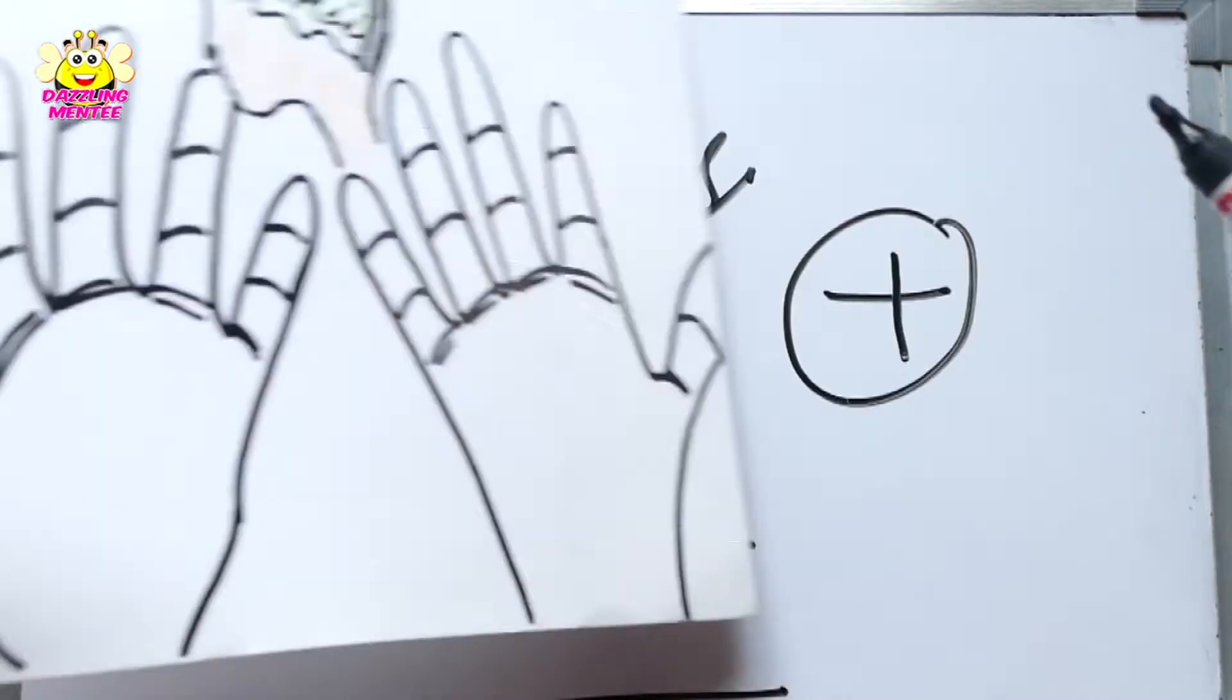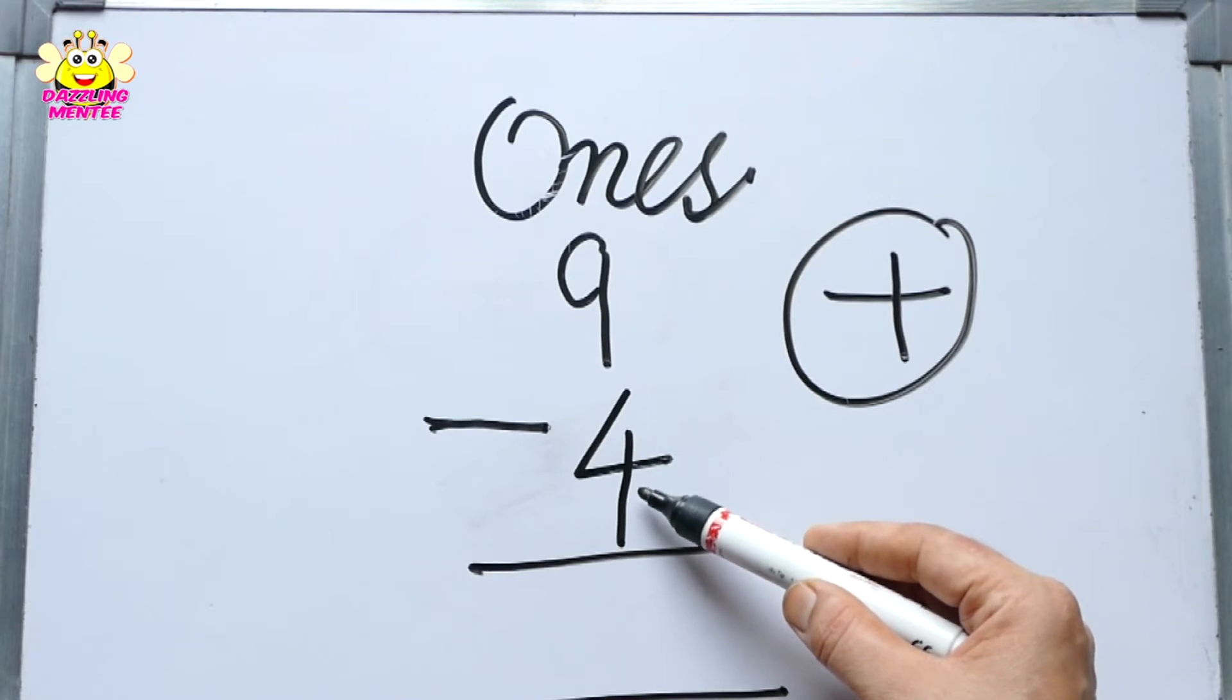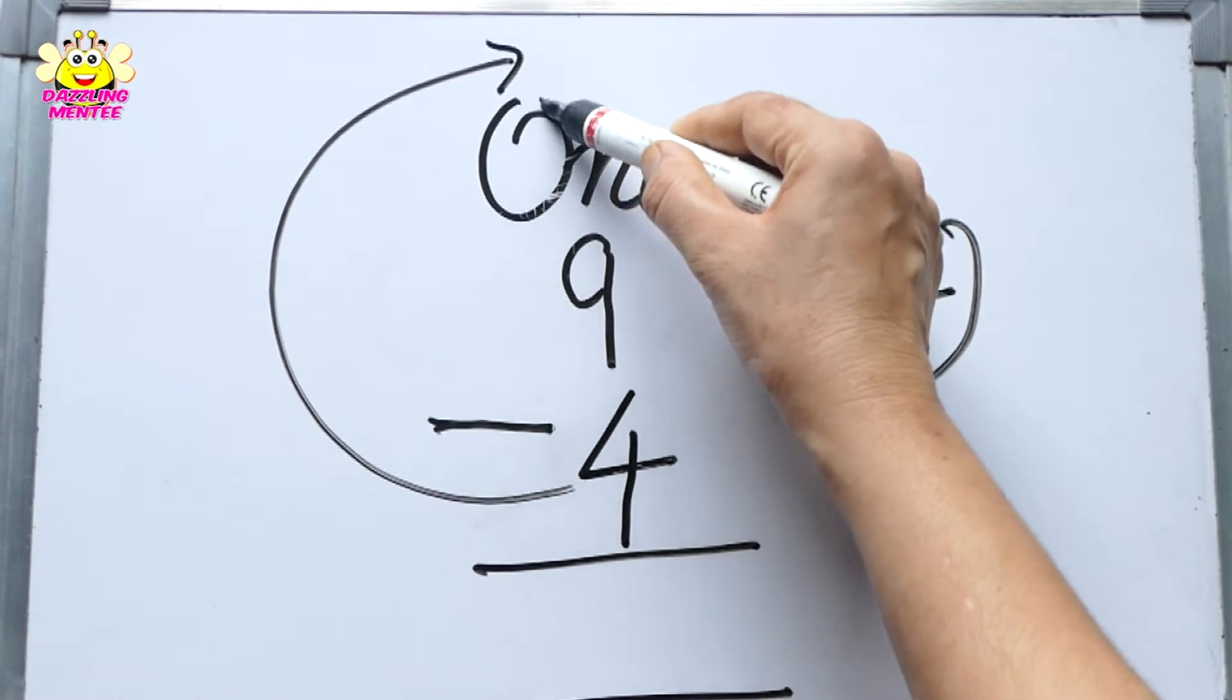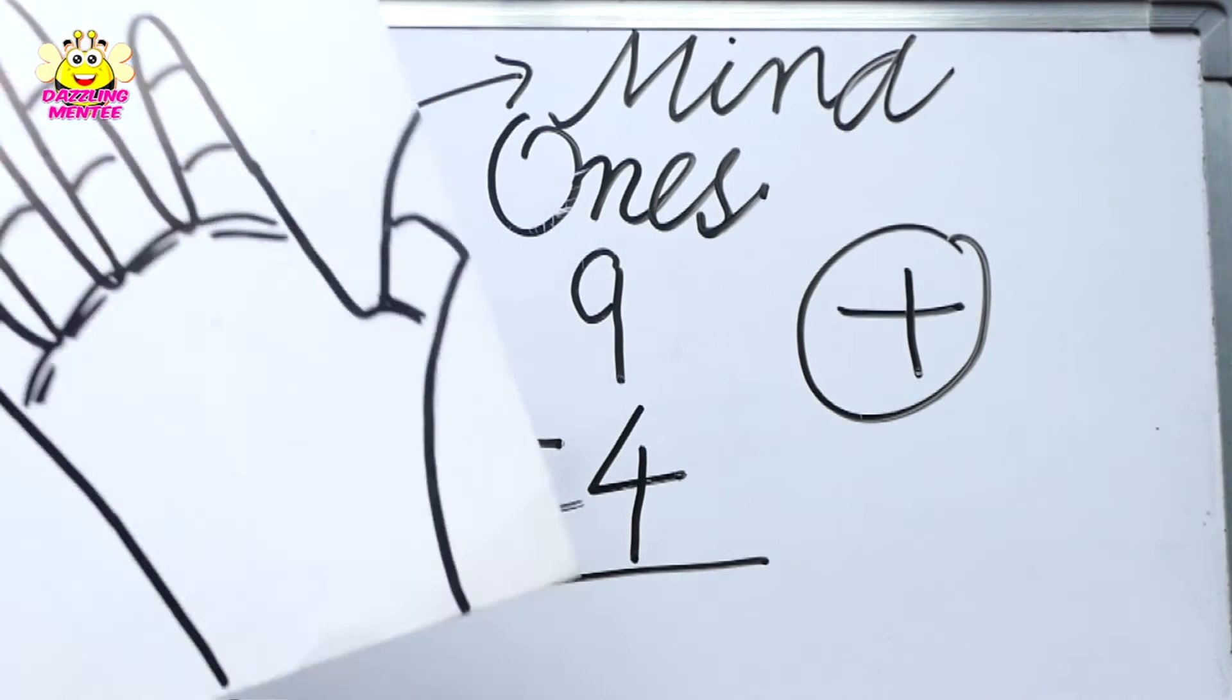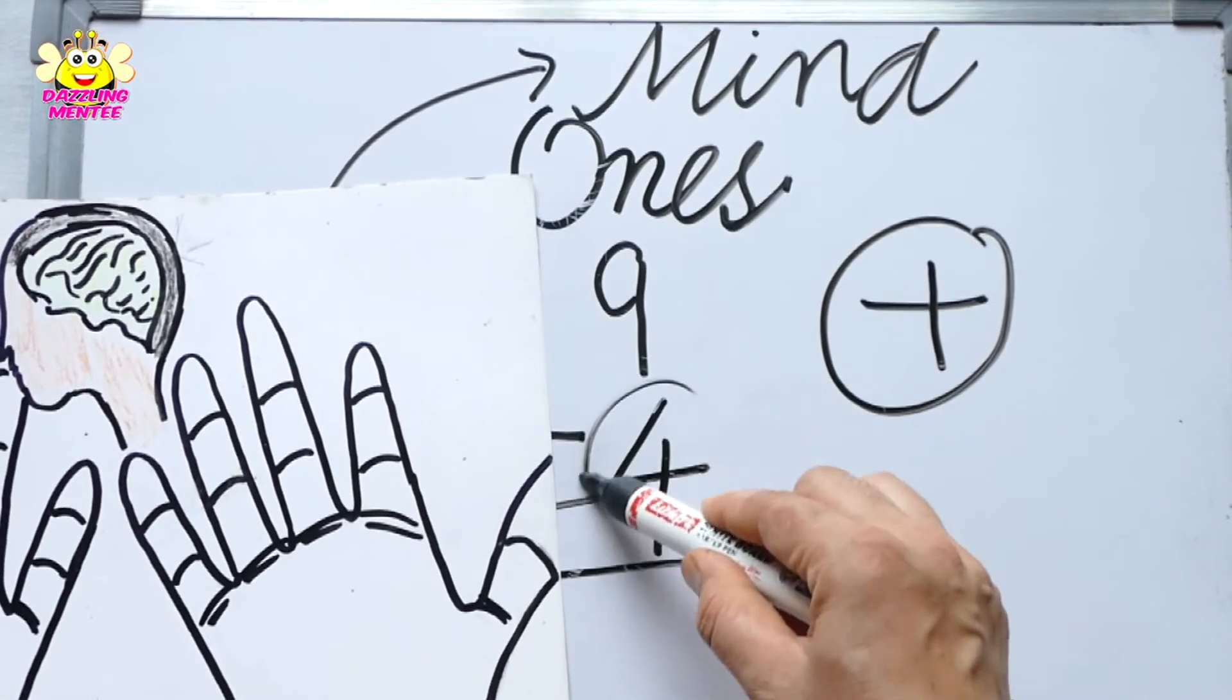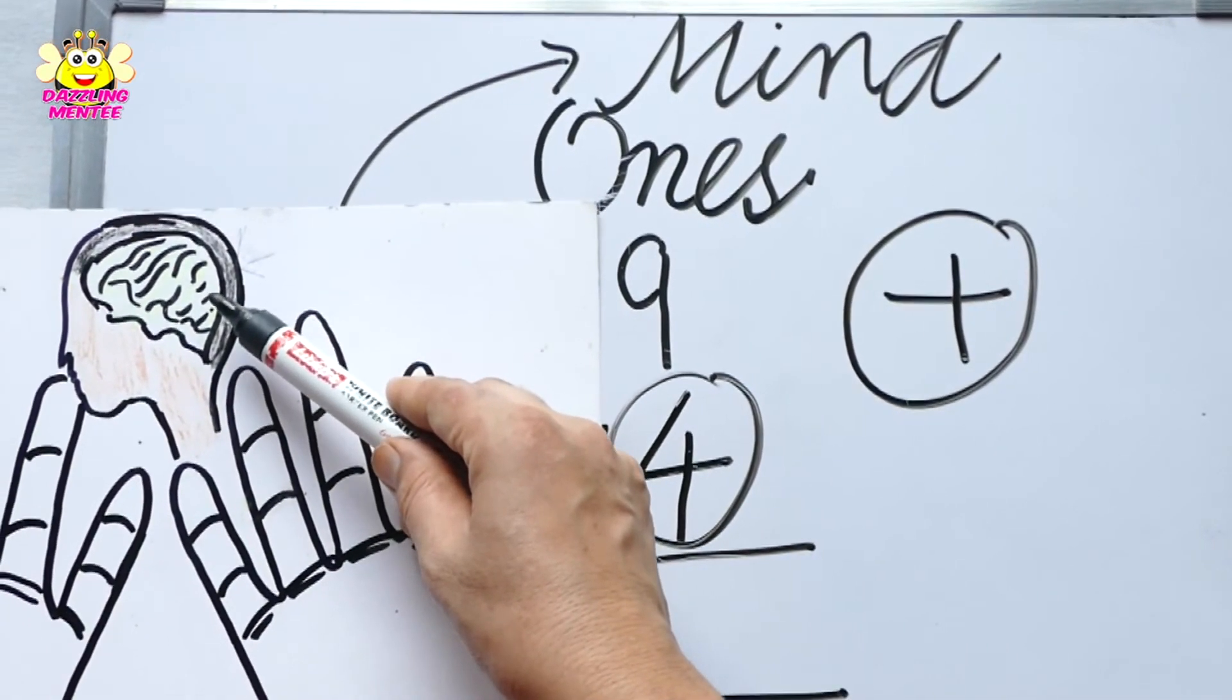But now in subtraction, what will we do? We will take the bottom number in mind. You can see, the bottom number is 4. We take 4 in mind.